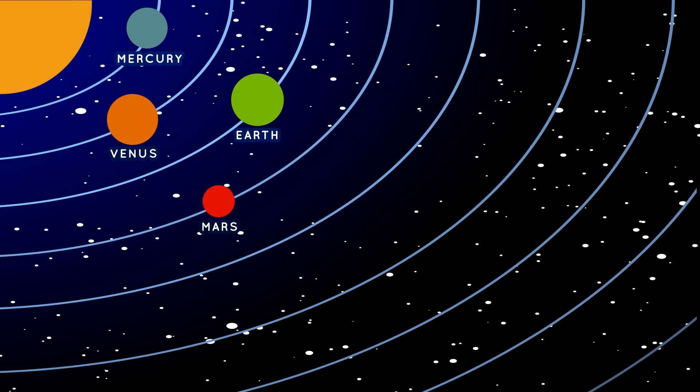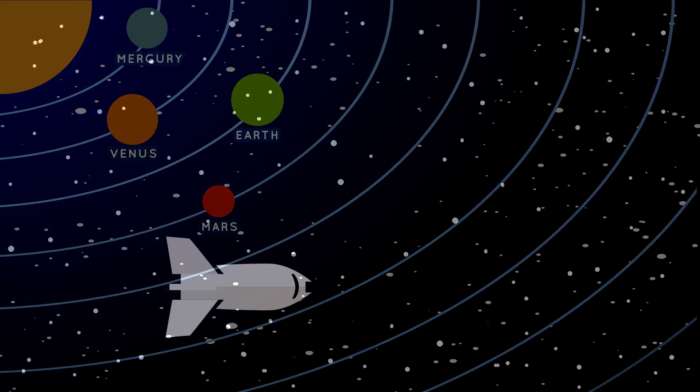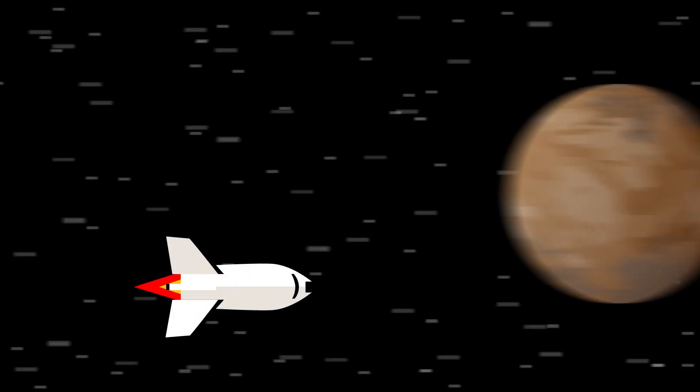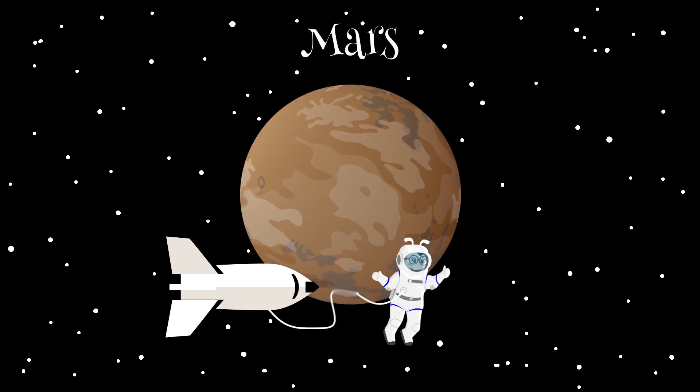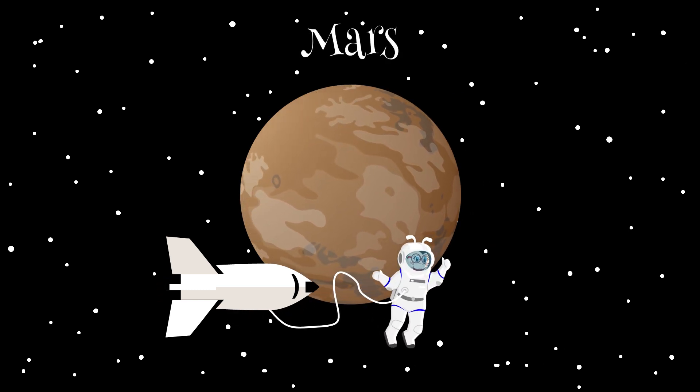Mars is the fourth planet from the sun. Mars is a cold, desert world. It is about half the diameter of Earth and has the same amount of dry land, but no water on its surface. Mars has clouds and wind, just like Earth, but very little oxygen, so humans would not be able to breathe on Mars.